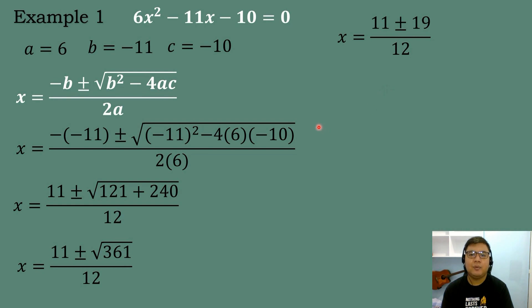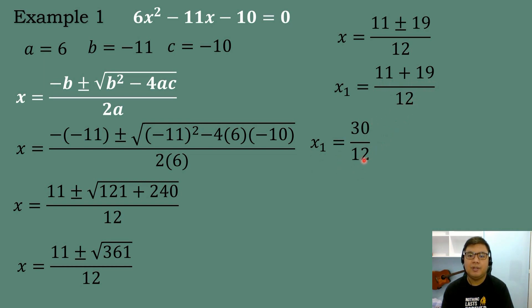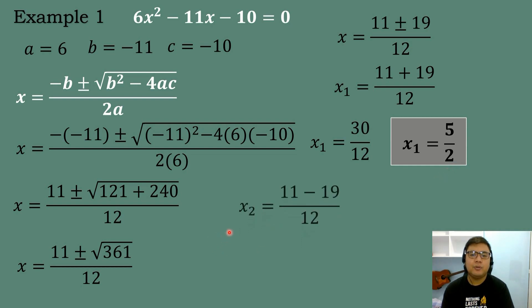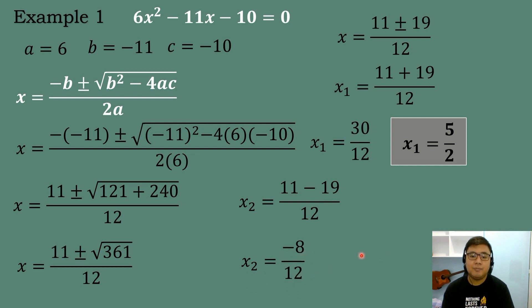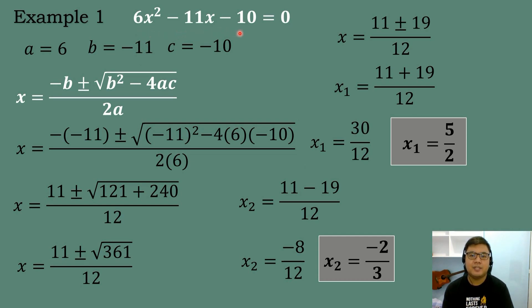Let's get the roots of the quadratic equation. The first root: X sub 1 equals 11 plus 19, all over 12. Adding the numerator, 11 plus 19 equals 30 over 12, which in lowest terms equals 5 over 2. The second root: X sub 2 equals 11 minus 19, all over 12. So 11 minus 19 equals negative 8 over 12, which in lowest terms equals negative 2 thirds. Therefore, the two roots of 6X squared minus 11X minus 10 equals 0 are 5 over 2 and negative 2 thirds.